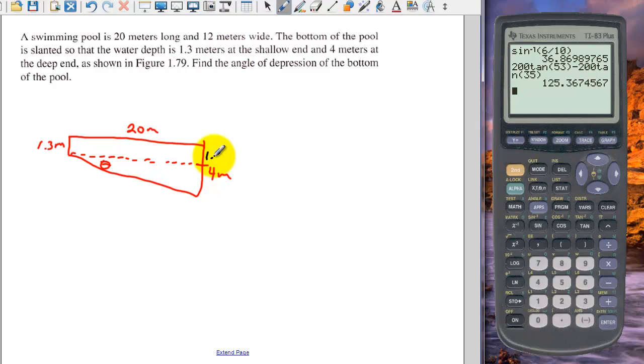So we can split this 4 meters. This is 1.3. So to find this side of this triangle, it's going to be 4 minus 1.3 or 2.7 meters. This is 200. Again, we have opposite and adjacent. So again, it's going to be a tan problem. So the tan of theta is 2.7 over 200.